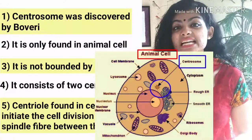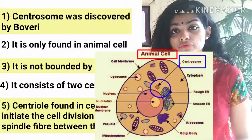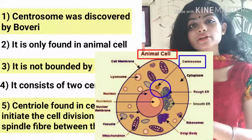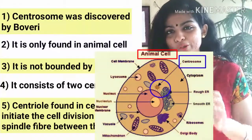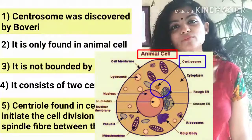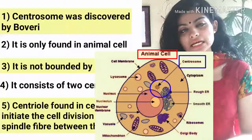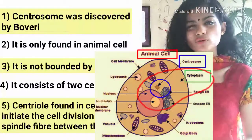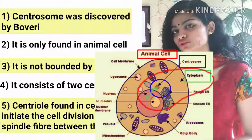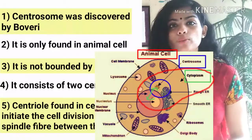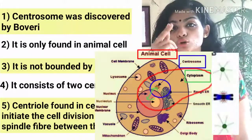In animal cells, centrosome helps in cell division. Centrosome does not have any membrane, just like ribosome — it is not a membrane-bound cell organelle. Where is centrosome present? Centrosome is present in the cytoplasm, close to the nucleus, but it is present in the cytoplasm.